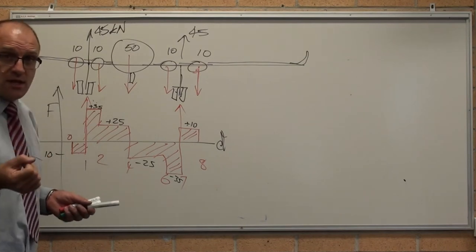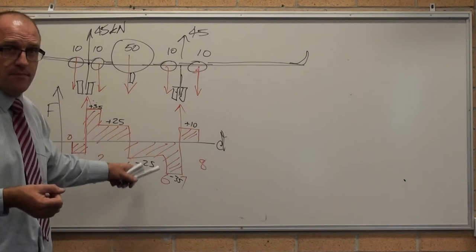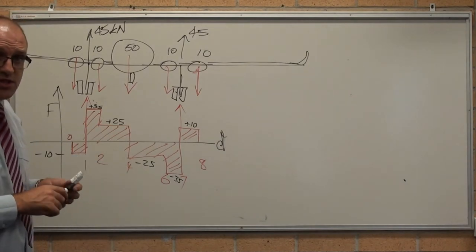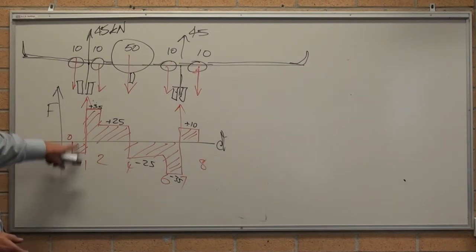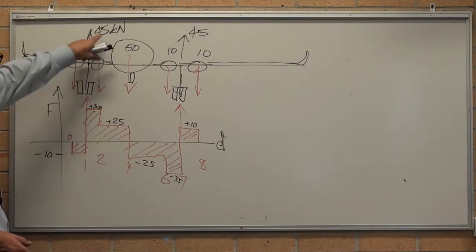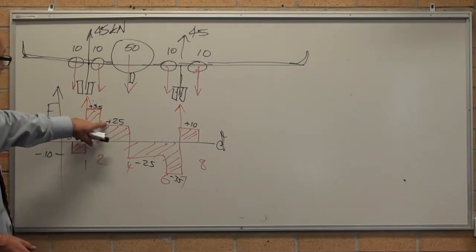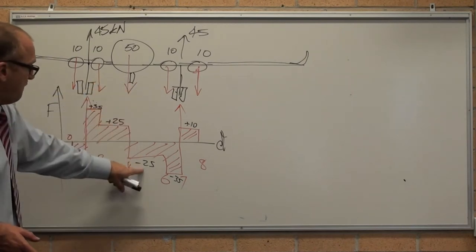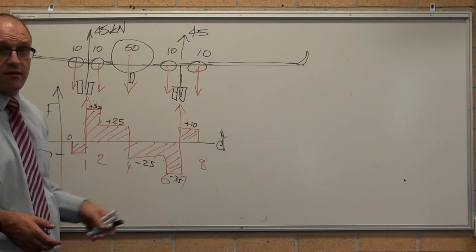So because moments are force times distance, here's our shear force diagram where we've just followed the forces up and down. The value here is minus 10 because it's 10 down. Minus 10 plus the 45 means the top of that is 35, means that is plus 25. Come down 10, come down 50, come down another 10, go up 45, back down to zero.